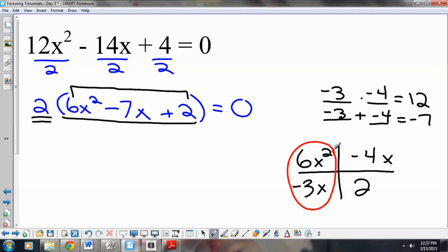In the first column, the greatest common factor is 3x. In the second column, the greatest common factor is negative 2. In the first row, the greatest common factor is 2x. In the second row, the greatest common factor is negative 1.